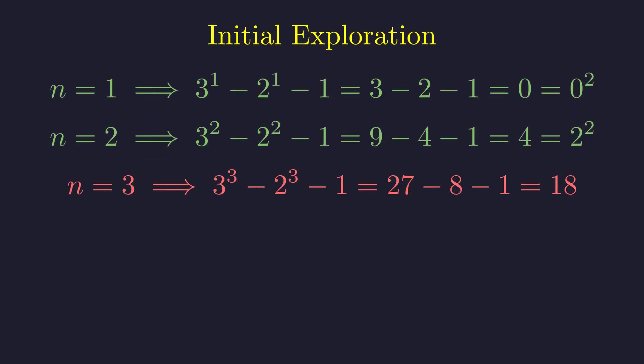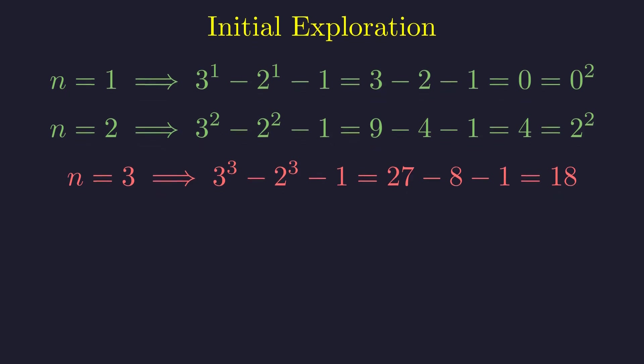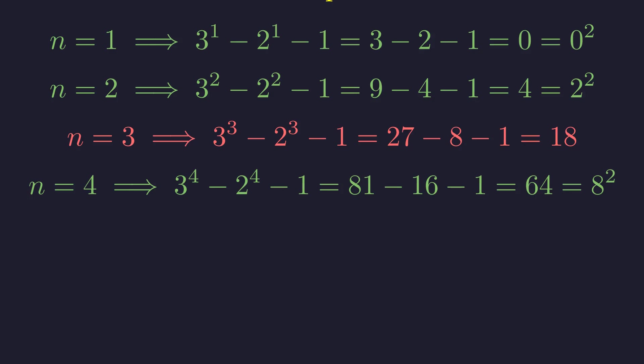What about n equals 3? We get 27 minus 8 minus 1, which is 18. Now 18 is definitely not a perfect square. But then for n equals 4, we get 81 minus 16 minus 1, which is 64. And that's 8 squared. So we have a third solution.